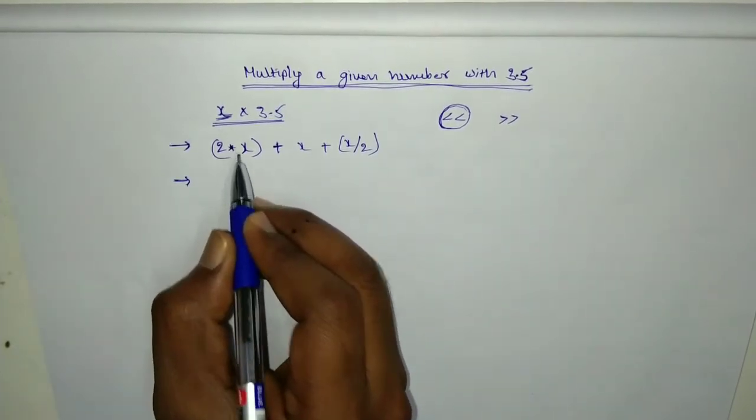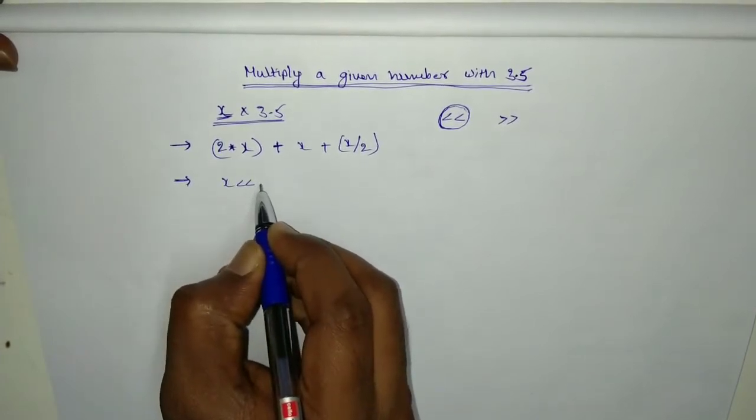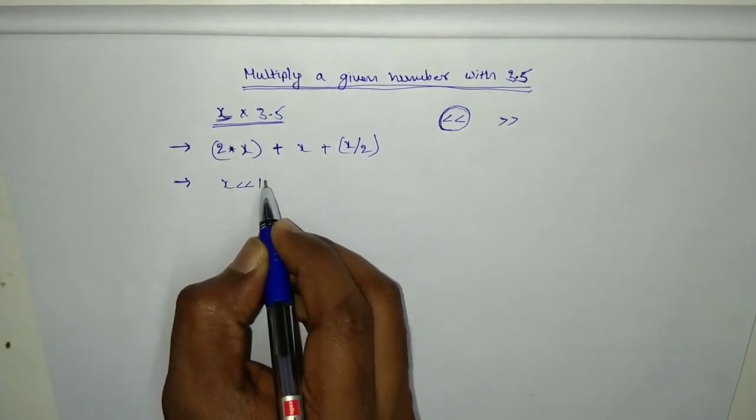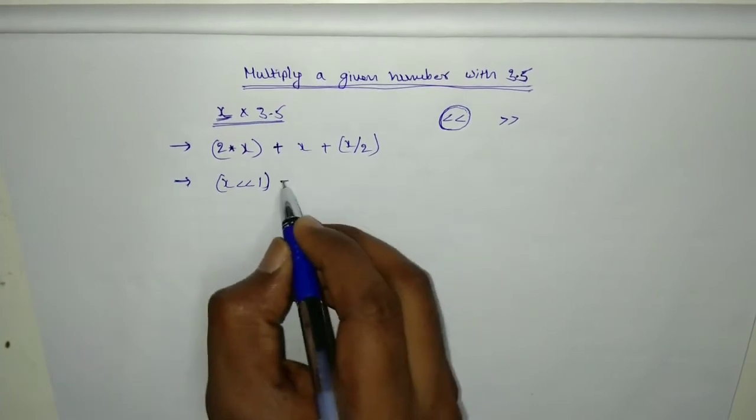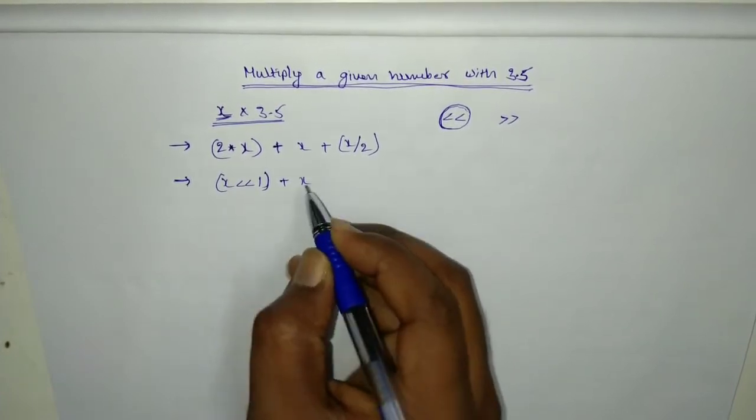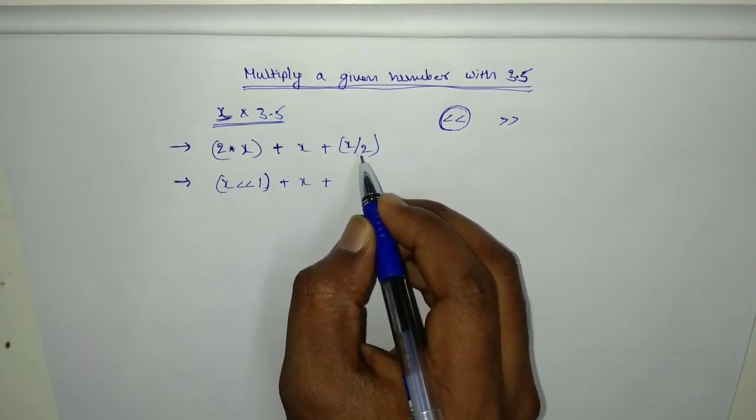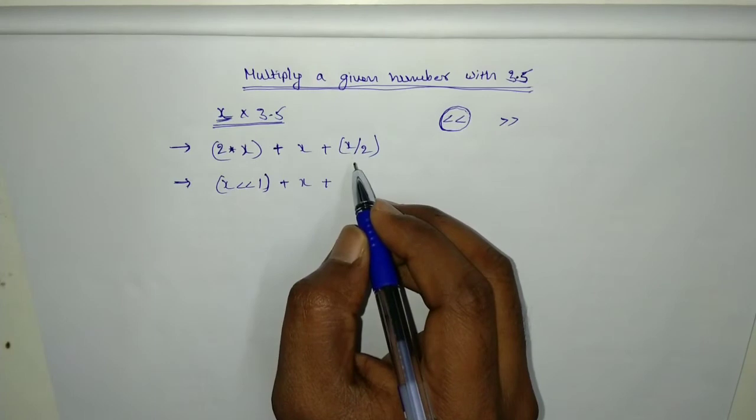So that is exactly equal to this. If you do x left shift one time, then x will become 2x, and x is the same. And this is half of the number.